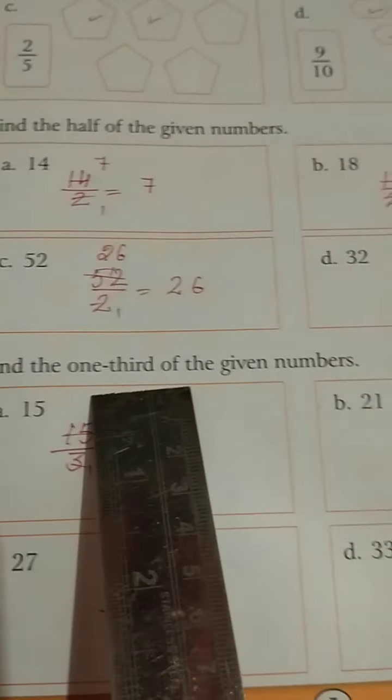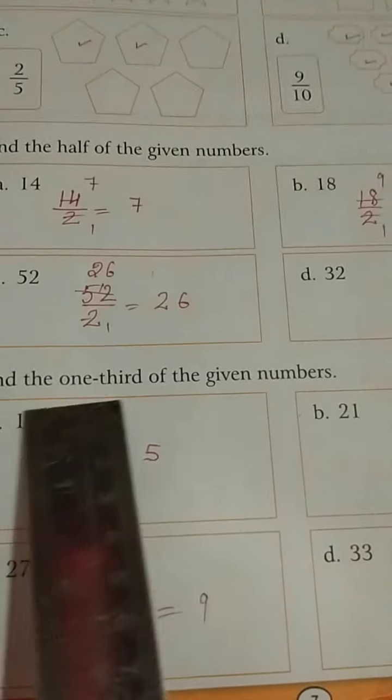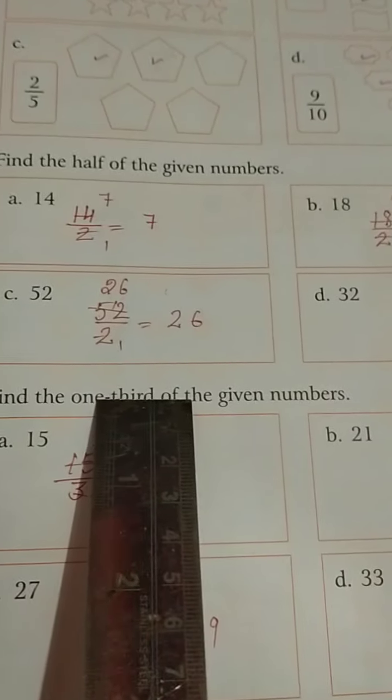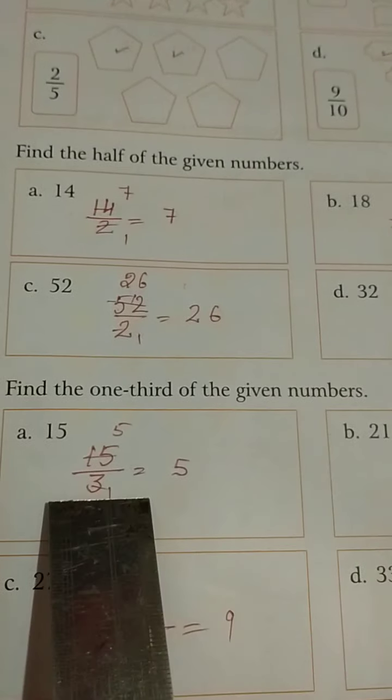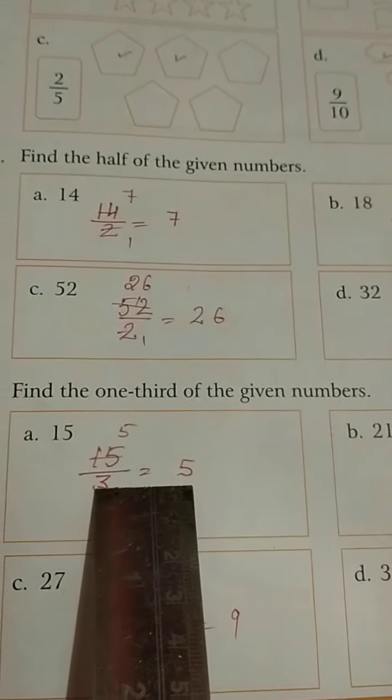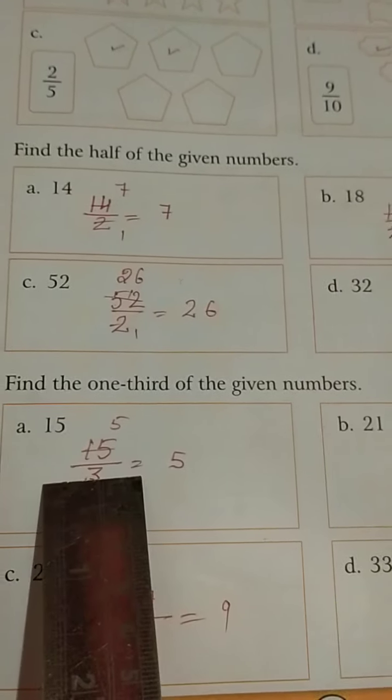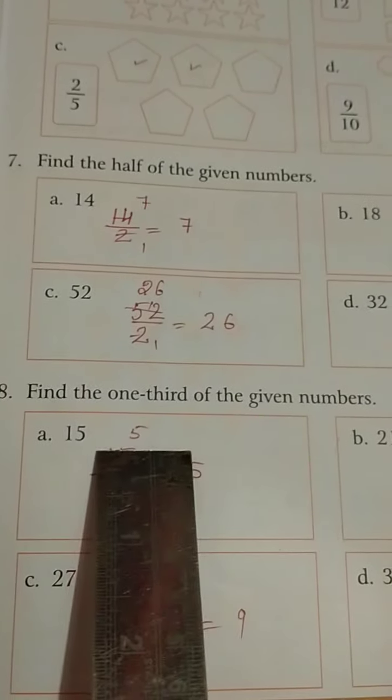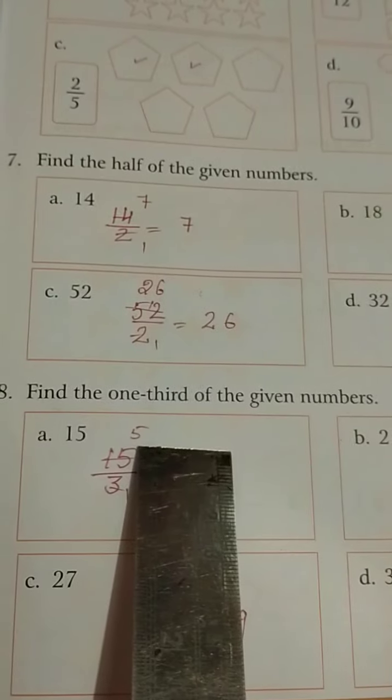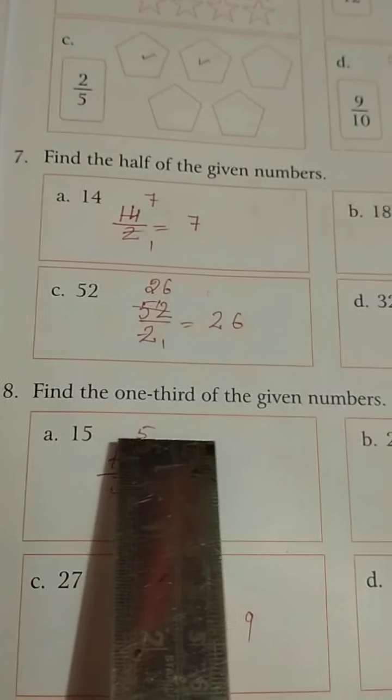Next find the 1 3rd of the given number. 1 3rd means divide by 3. 15 divided by 3, then we are getting 1 3rd. 1 4th means dividing by 4, half means dividing by 2, 1 5th means dividing by 5, 1 9th means dividing by 9.